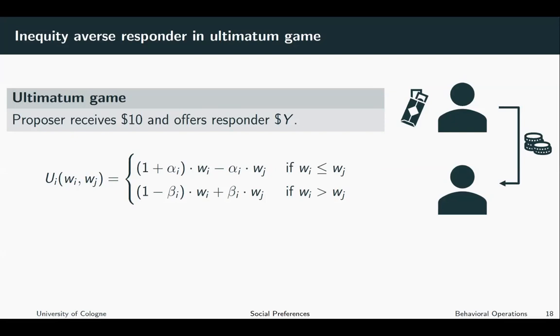All right, now let us turn to the first case. In the first case, the proposer was generous and offered a split that makes the responder better off than the proposer when accepted. So we take the first line and plug in our information.